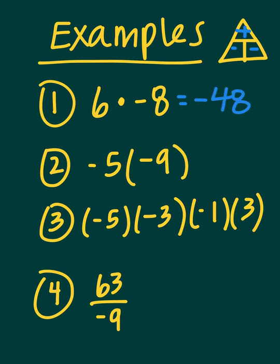Number two: negative five — remember, the parentheses tell you to multiply — times negative nine. Two negatives leaves you with a positive answer. Five times nine gives you forty-five.